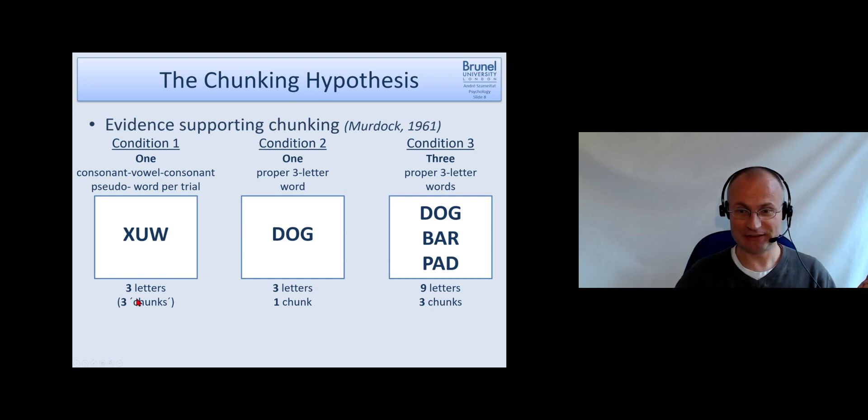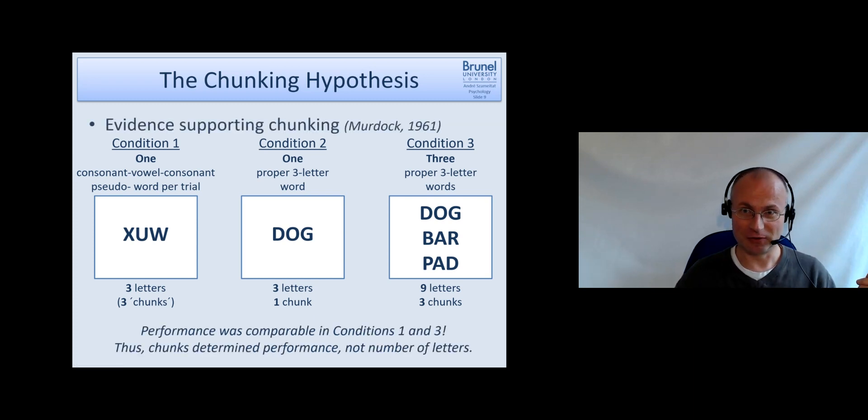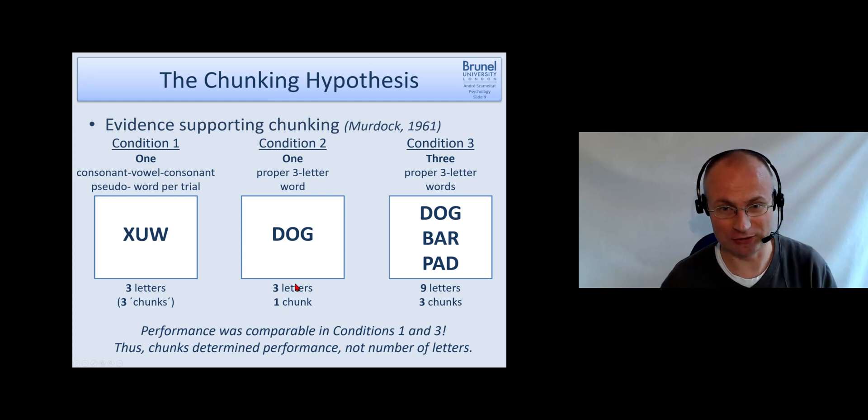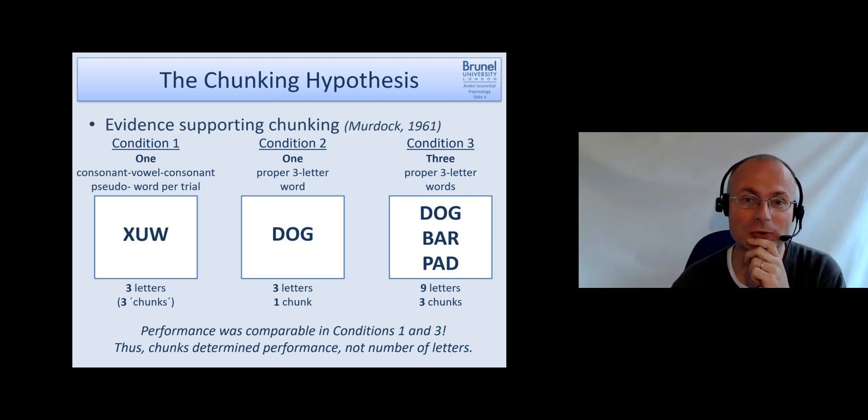Now the question is what was the outcome? Were these two conditions similar because it was three letters in both instances? Or are conditions one and three similar because in both cases it were three chunks? And what they found was indeed that the performance in condition one was comparable to the performance of condition three, although much more information in terms of letters has to be remembered. It's three chunks here and three chunks here. Because it's a non-word, every letter constitutes a chunk in itself. Condition two had better performance than the other two because it was easier to remember, only one chunk. So this is strong empirical support for the idea that chunking indeed takes place when we encode information in our short-term memory.